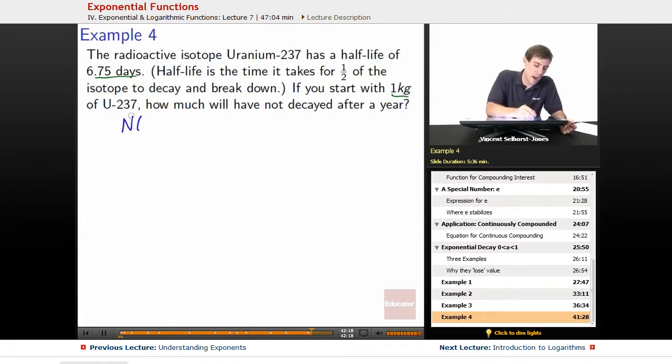So let's make it amount. The amount of our isotope that is not decayed based on time is equal to, how much did we start with? We started with one kilogram times what happens every cycle? One half. We half it every time we hit a cycle. So how fast is a cycle? Number of days, we'll make T into the number of days because we're dealing with days. So T divided by 6.75.